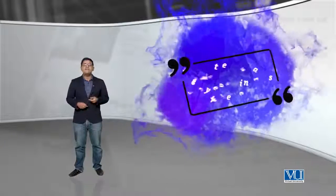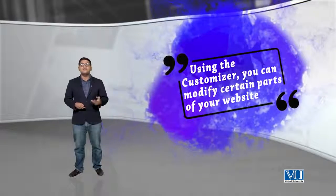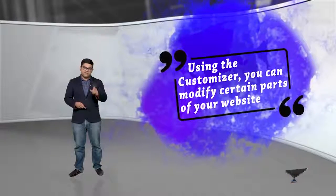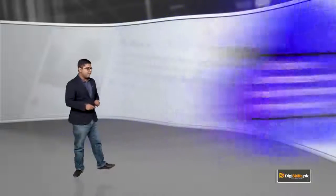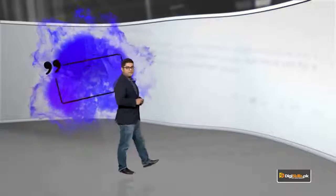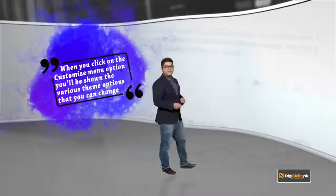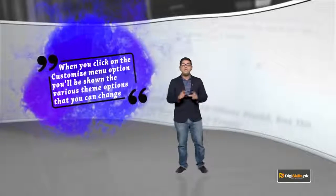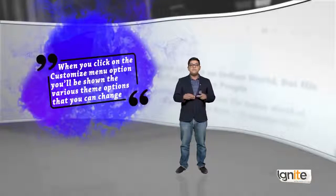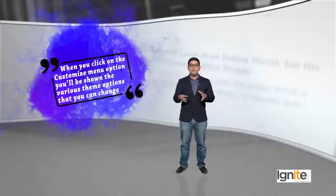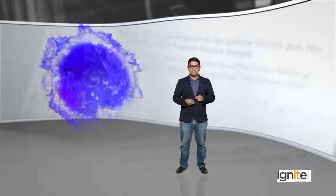But before we do that, thoda sa customizer ke baare mein baat karte hain. What is the customizer feature — customizer aakhir kya hota hai? So using the customizer, you can modify certain parts of your website. It's a feature that is available natively on WordPress. Jab aap customize pe click karte hain, aapko ek menu dikhaaya jata hain with various options. Aur woh options agar aap change karein, you will be able to change the look and feel of your website.